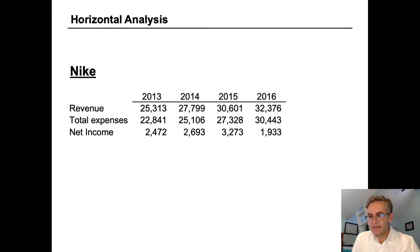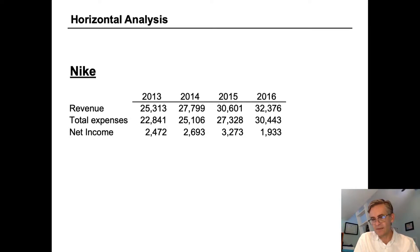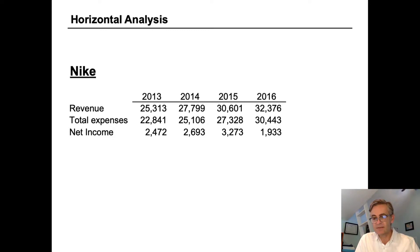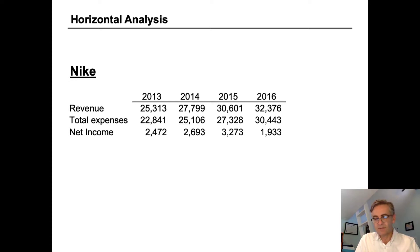Here is some financial data for the apparel company Nike, and we're going to use this as an example of how to conduct a horizontal analysis. Horizontal analysis is also called trend analysis or sometimes base year analysis, and it allows us to compare data from the same company over several periods. It's useful to quickly identify direction, rate, and magnitude of what's going on, and we can easily see changes in the data. It's sometimes also used as the basis for forecasting.